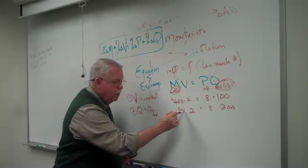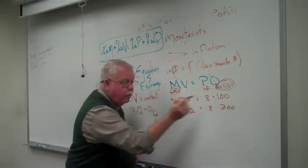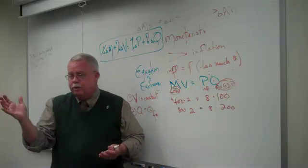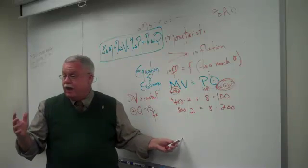If output doubles, then double the size of the money supply. You won't have inflation. If you increase the money supply too fast, you get inflation. If you increase it too slow, you drag the economy down into a recession.